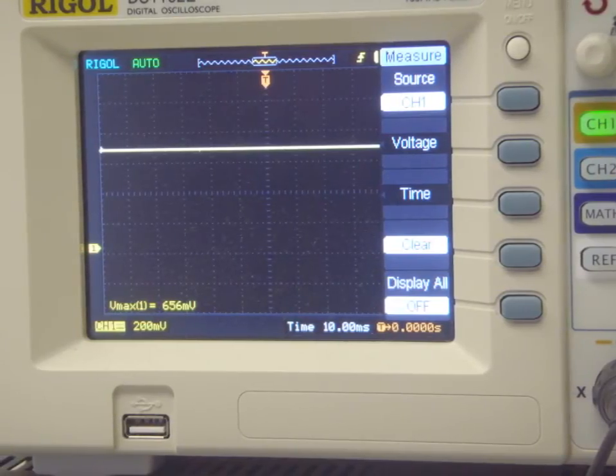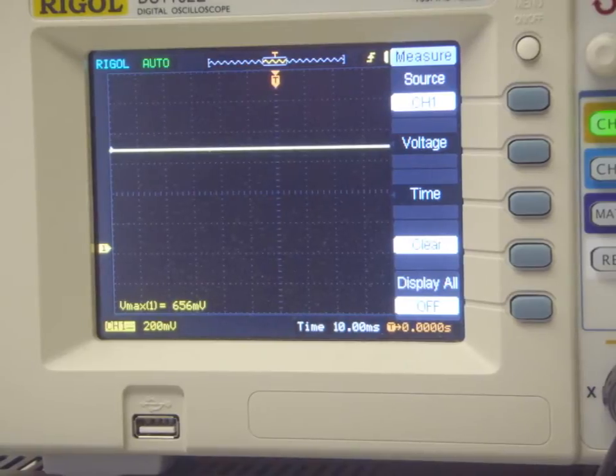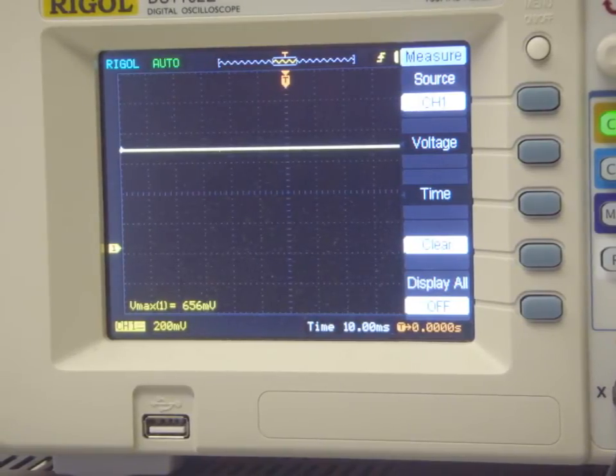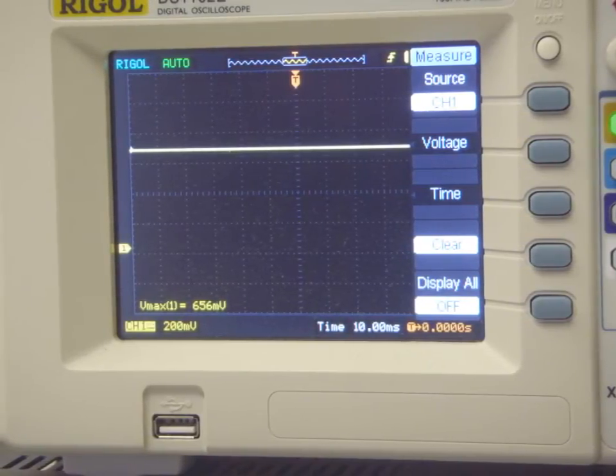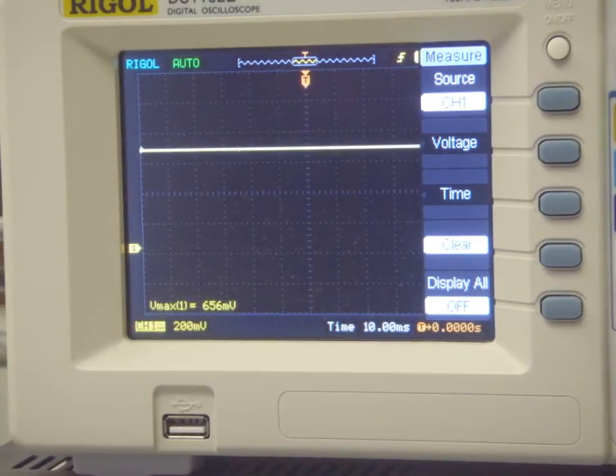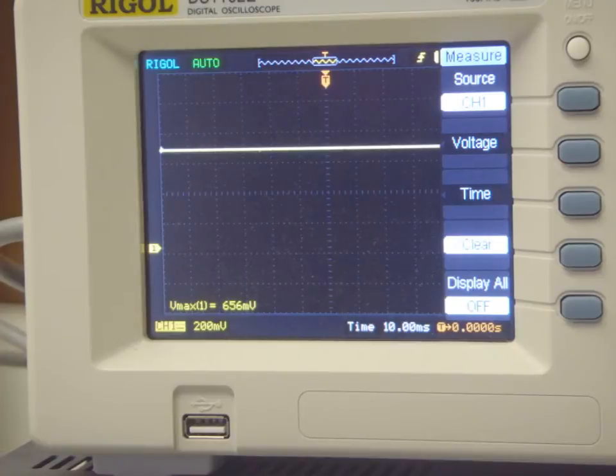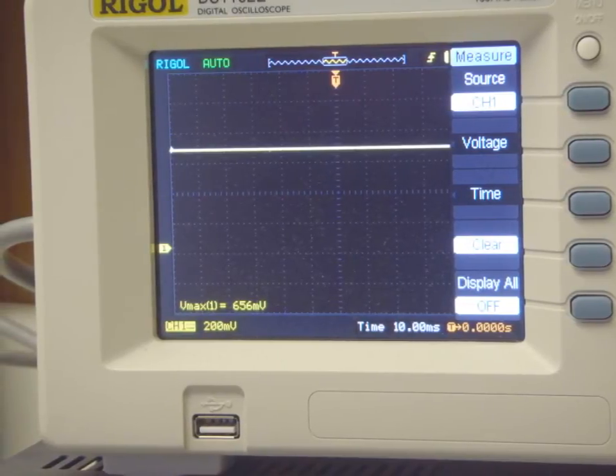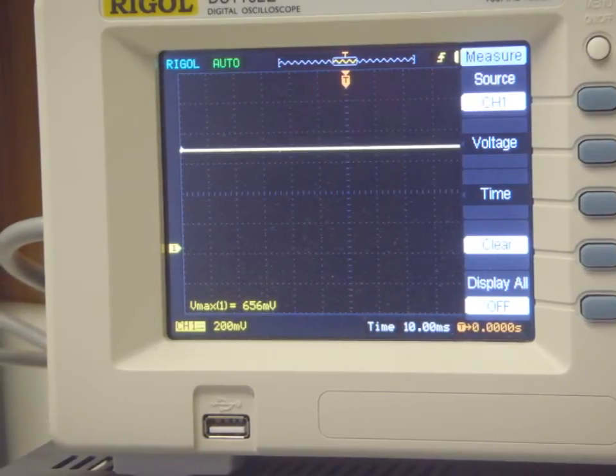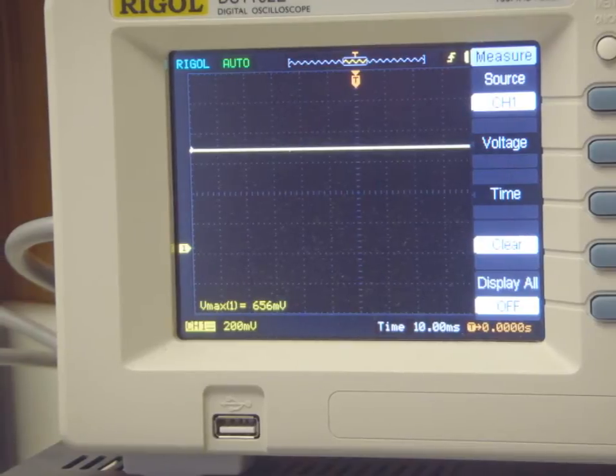As you can see here, on our actual oscilloscope, this is the reading across RL. And we get 656 millivolts for our actual reading for our voltage. And it's to be expected as it's not ideal in some of the components and stuff like that. So some of the tolerances can accumulate that. But as you can see, it's fairly accurate to our calculations.